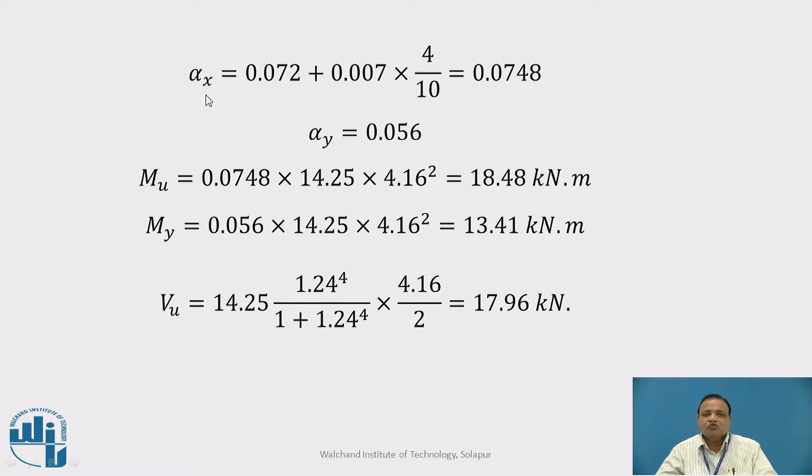Alpha Y is a single value, 0.056. MUX equals alpha X times Wu times Lx square. MUY equals alpha Y times Wu times Lx square. Both are Lx square. It works out to be 13.41. Vu is the support reaction, 14.25 times R^4 upon 1 plus R^4, where R is Ly by Lx, times Lx by 2 equals 4.16 by 2. It works out to be 17.96 kilonewton.